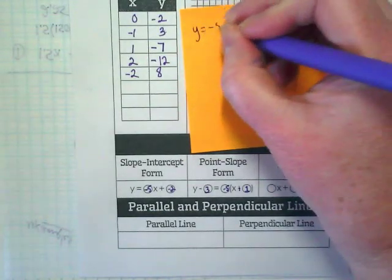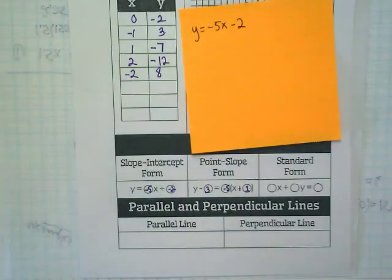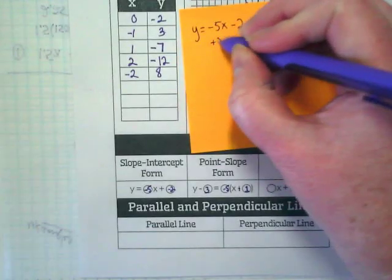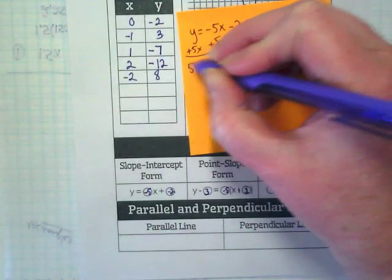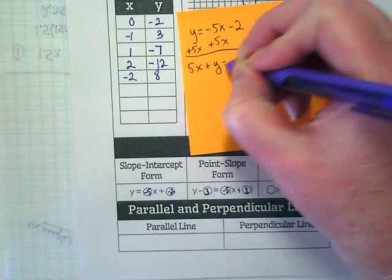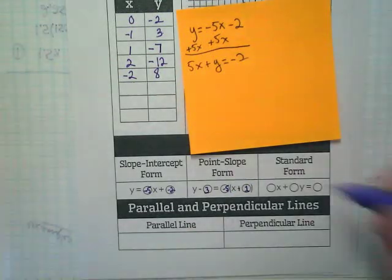y equals negative 5x minus 2. How do I get that into standard form? 5x plus y equals negative 2.